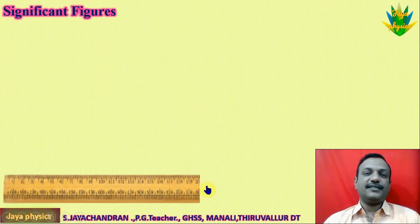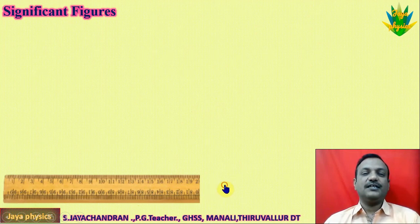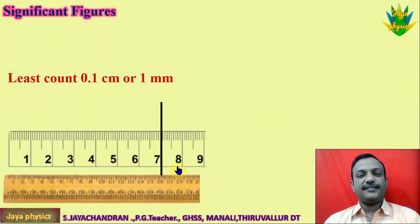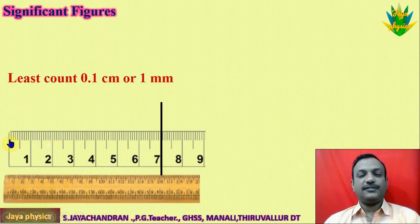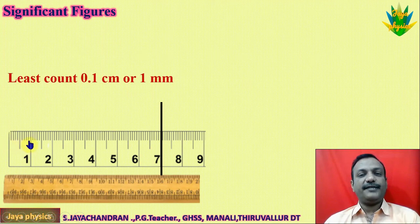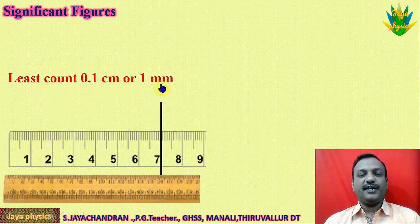This is a meter scale. Using this meter scale, we can find the length of an object. The least count of this meter scale is 0.1 centimeter, or otherwise one millimeter. This is 1 millimeter, 2 millimeter, 3 millimeter, 4 millimeter. The smallest graduation is 0.1 centimeter, that is one least count — 0.1 cm or one millimeter.